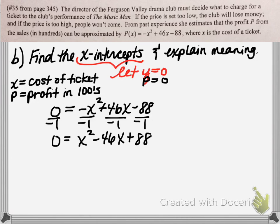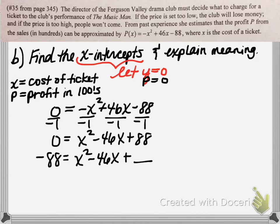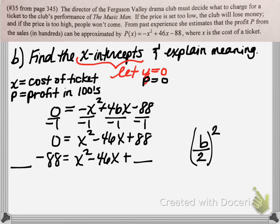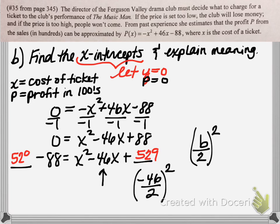Now, if you could factor here you can try, but I'm going to show completing the square. We take the c value and move it to the other side so we can focus on the two terms with the variable — so subtract 88. Now we're ready to physically complete the square by adding a constant to the right-hand side so it will be factorable. Whatever we add to the right, we also add to the left to keep the equation balanced. We add the quantity of b divided by 2, squared. Here b is negative 46, so negative 46 divided by 2 is negative 23, and 23 squared is 529. We add positive 529 to both sides.